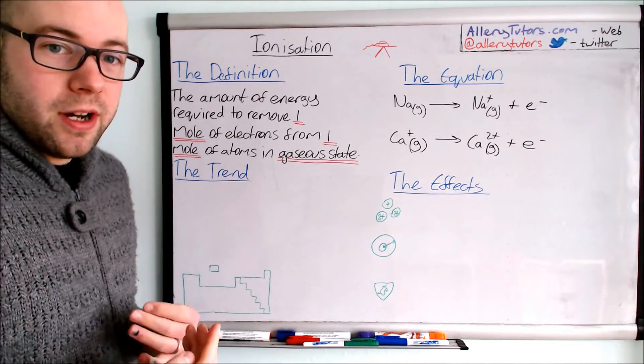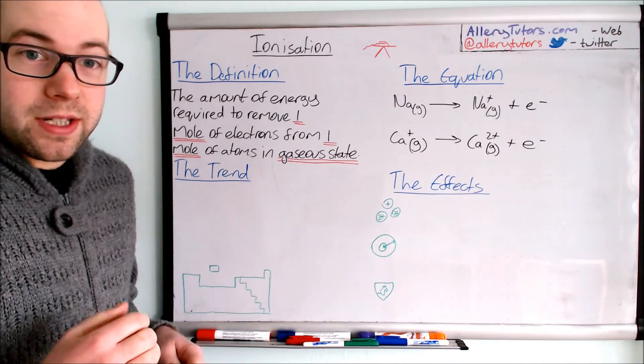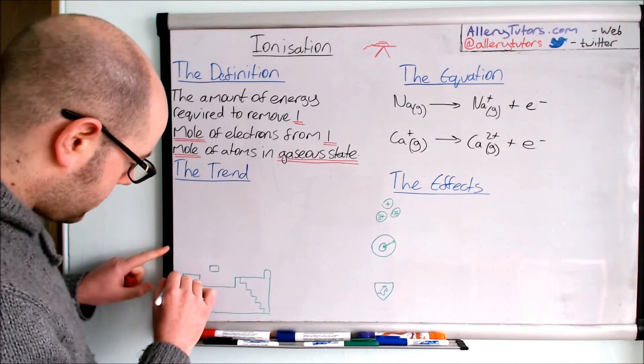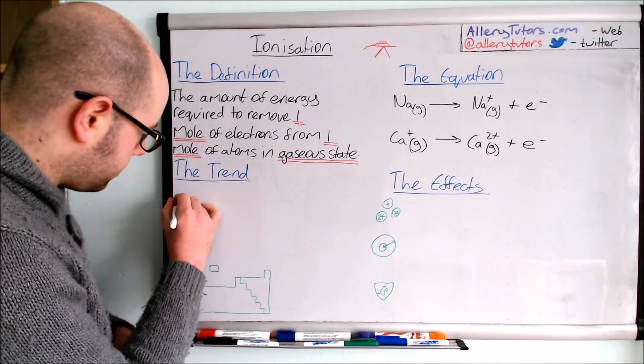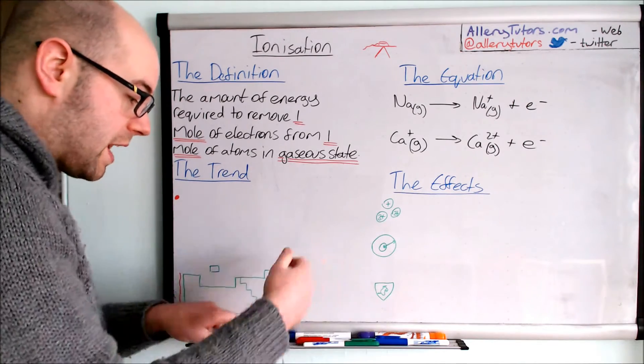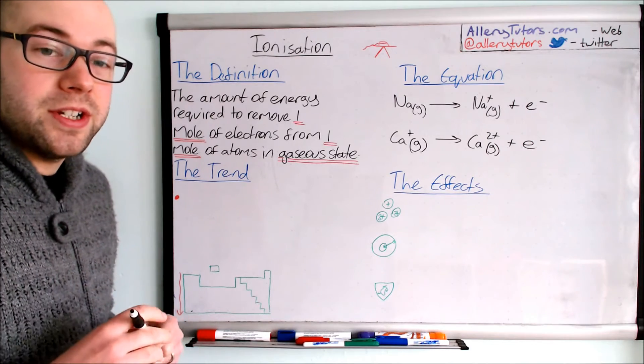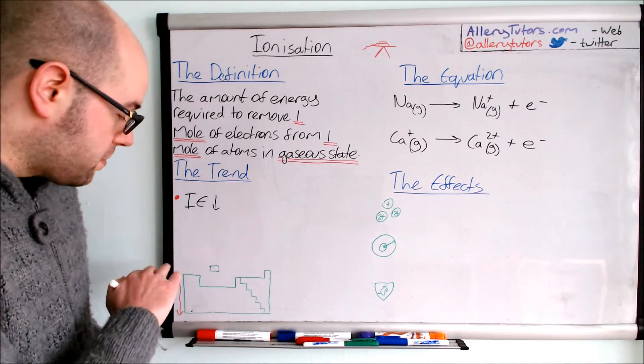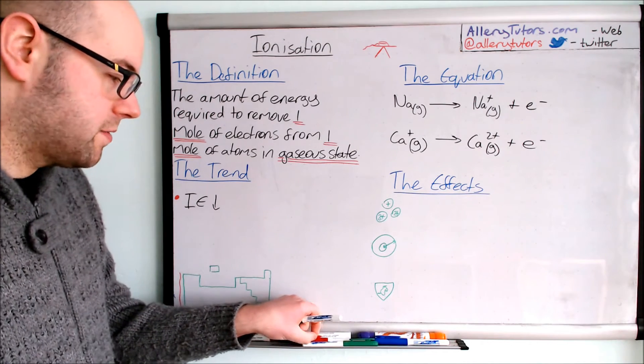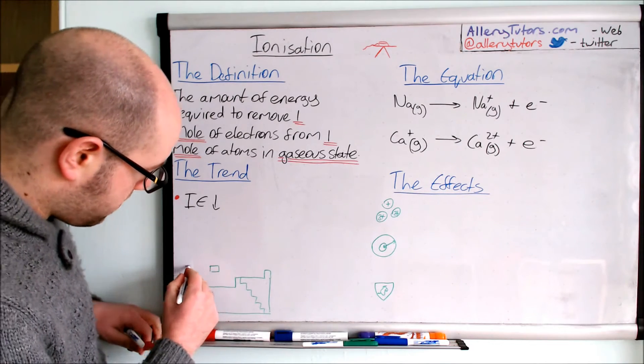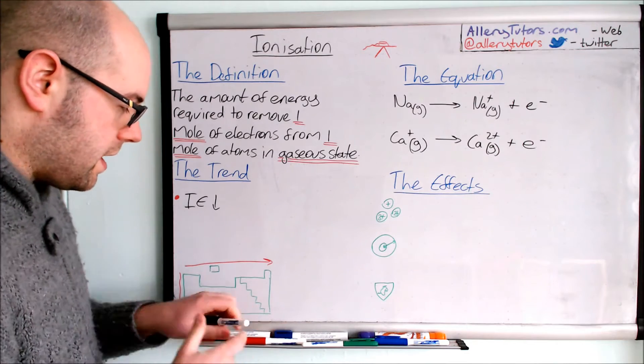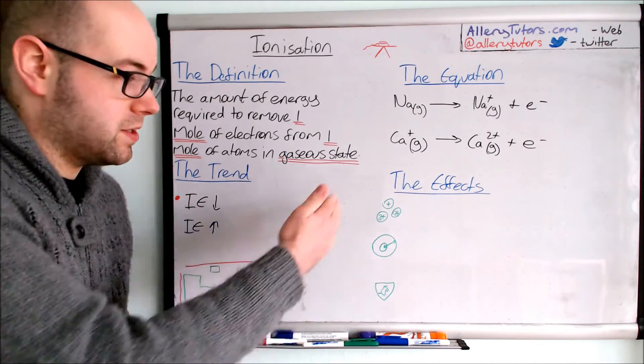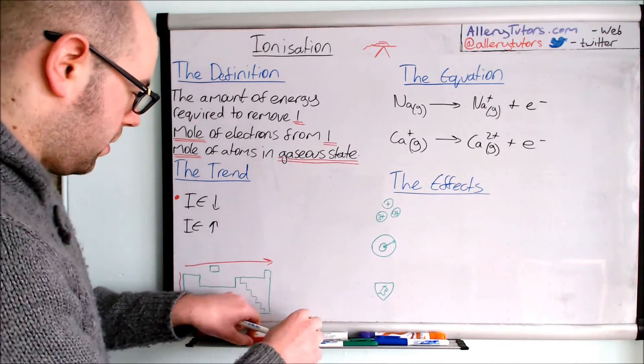Now we know what the equations are, we need to look at the trend of these things. There's two things we're going to look at which is down groups and across periods. As we go down the group, we've got our diagram of our periodic table here, so as we go down groups like that, the general trend is that the ionization energy decreases. The ionization energy declines as we go down the group. And as we go across periods, I'll explain this in more detail.